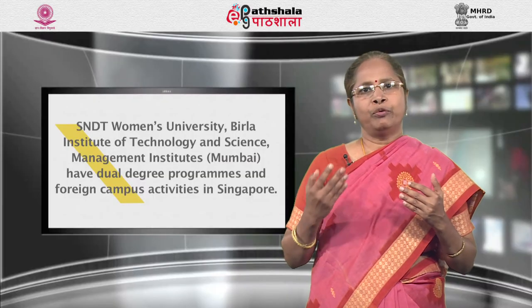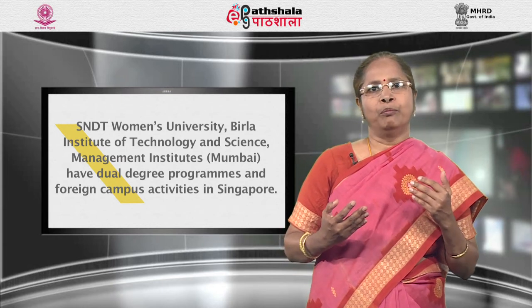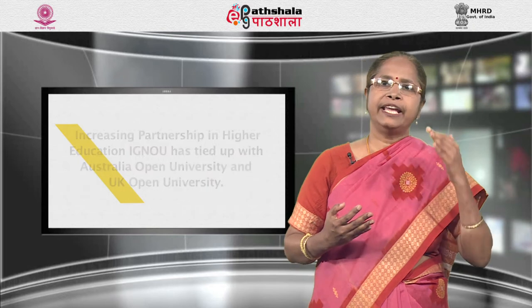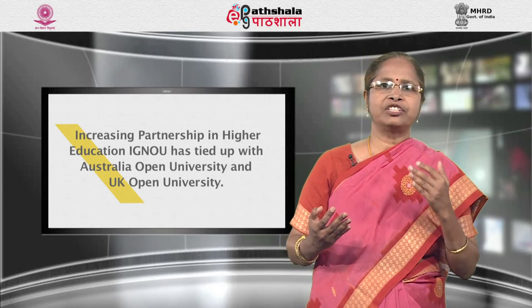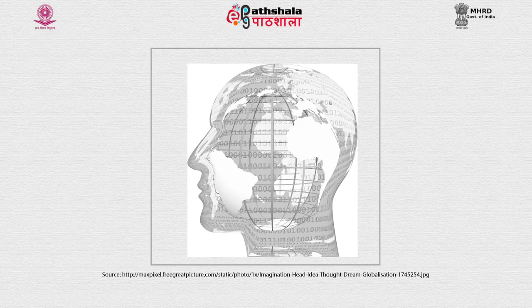Establishing campuses abroad: some schools, colleges and universities have campuses abroad for sharing more enriched education, interaction and closer relationship. For example, SNDT Women's University, Bella Institute of Technology and Science, and Management Institutes of Mumbai have dual degree programs and foreign campus activities in Singapore. Increasing partnership in higher education: IGNOU has tied up with Australia Open University and UK Open University. It helps in skill development and knowledge updation of people from different countries. There are agencies and institutions of standards in different countries for global accreditation and curricular planning.